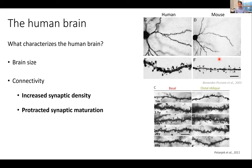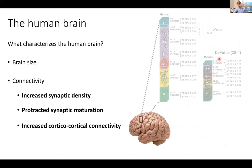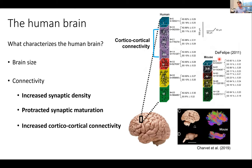The other thing about human synapses — and other features of the human brain as well — is that it takes longer for these synapses to mature. That's even true if you take into account the fact that we have a longer lifespan than many other mammals. And then there's the aspect of cortical-cortical connectivity.